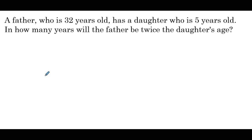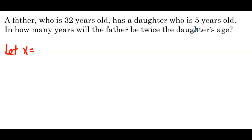A father who is 32 years old has a daughter who is 5 years old. In how many years will the father be twice the daughter's age? In this case we know exactly how old the father and daughter are, so we let x equal the number of years.